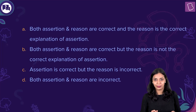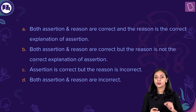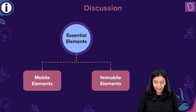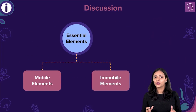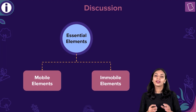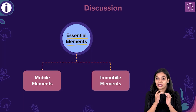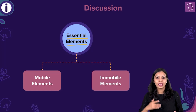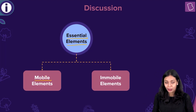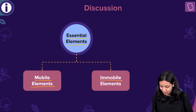In the assertion, there was a mention of mobile elements and it was told that if there is a deficiency of mobile elements, then the deficiency symptoms will first appear in young tissues. We have to examine whether that statement is correct. Essential elements are those which are absolutely essential for the growth and development of the plant. Among these, we can classify them based on how easy it is to mobilize them within different parts of the plant — into mobile elements and immobile elements.